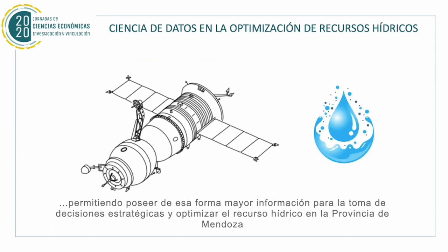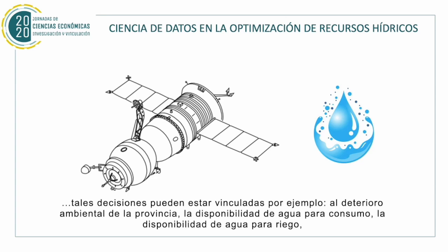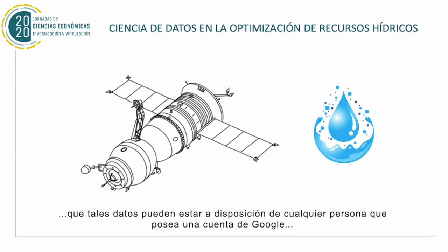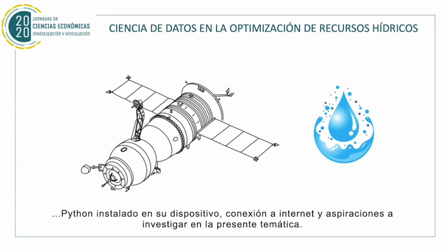allowing to possess timely measured information for taking strategic decisions and optimizing the water resources of the province of Mendoza. Such decisions can be associated, for example, with environmental damage in the province, the availability of water for consumption, the availability of water for irrigation, and water planning, among others. This investigation demonstrates that such data can be accessed by any person who possesses a Google account, Python installed on their device, a Wi-Fi connection, and the aspiration to investigate on this topic.